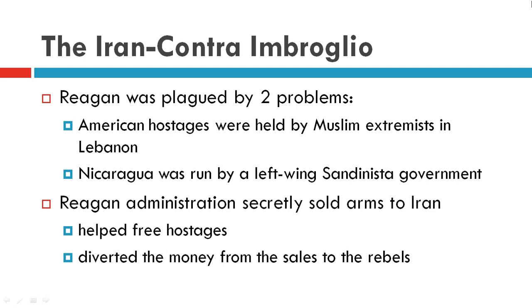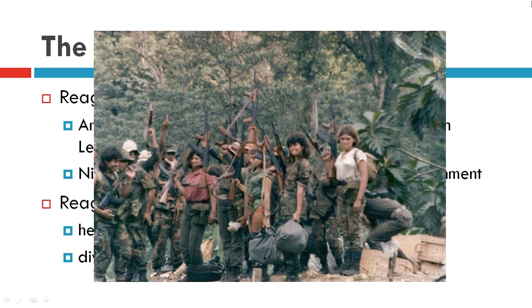To circumvent Congress's ban, Reagan's administration secretly sold arms to Iran — who helped to free the hostages — and then diverted the money from those sales to the Nicaraguan rebels.